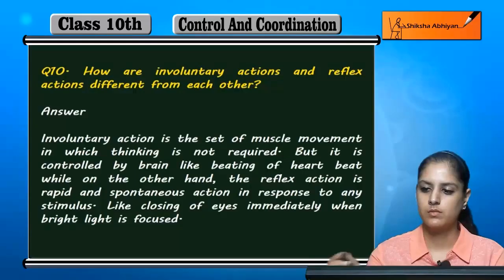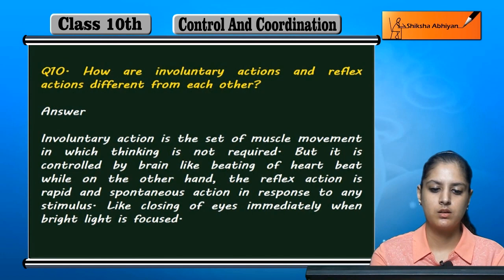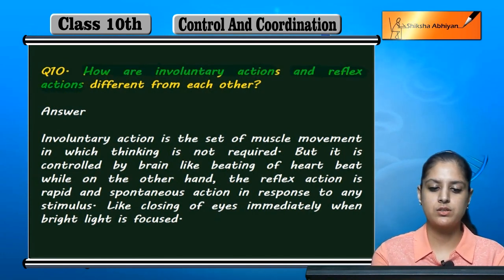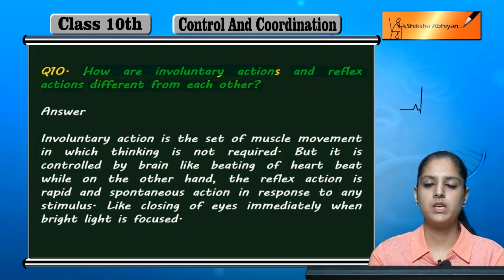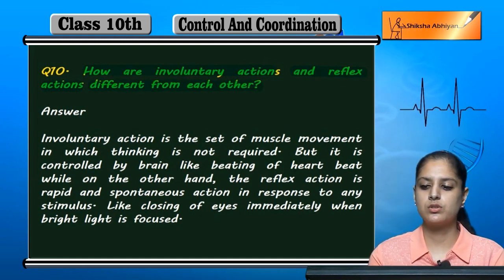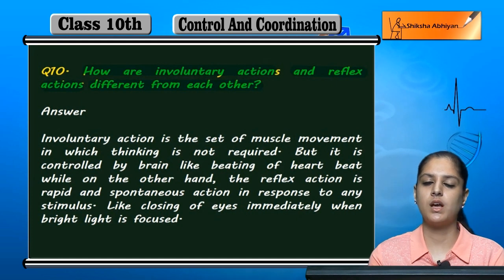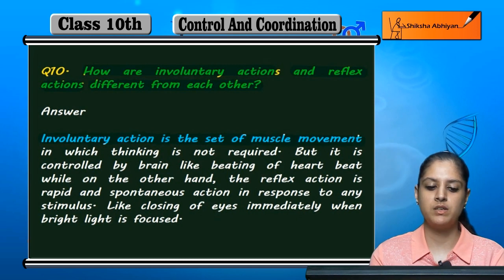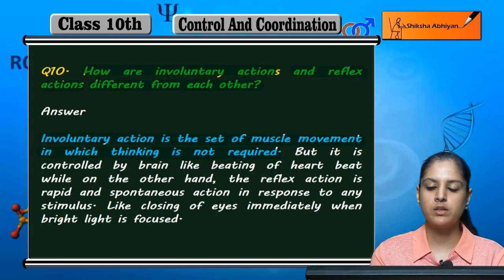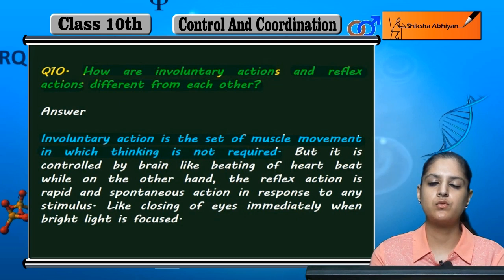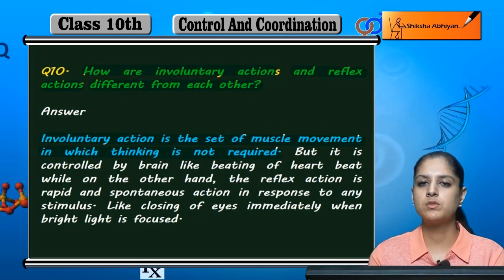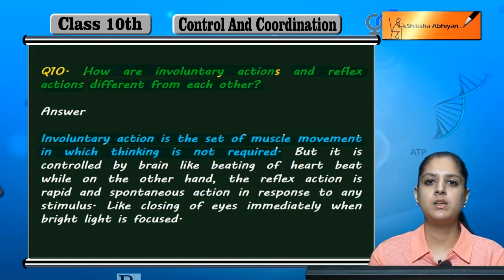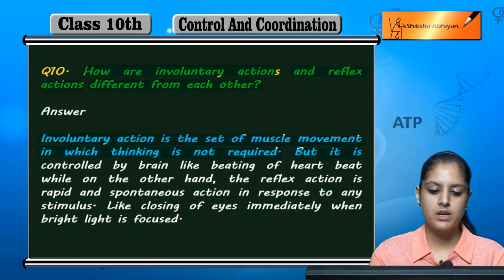Question 10: How are involuntary actions and reflex actions different from each other? Involuntary actions are those which are spontaneous — we don't think about them, they happen on their own. These are muscle movements in which thinking is not required.